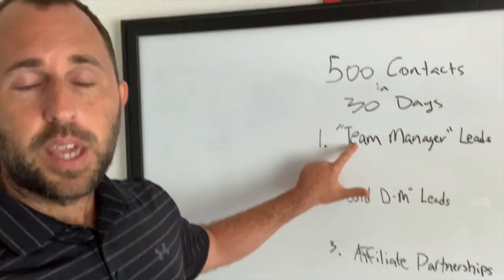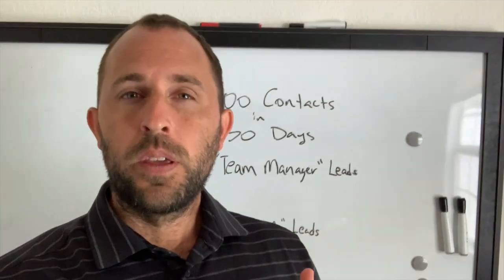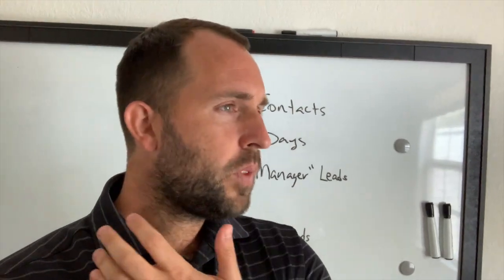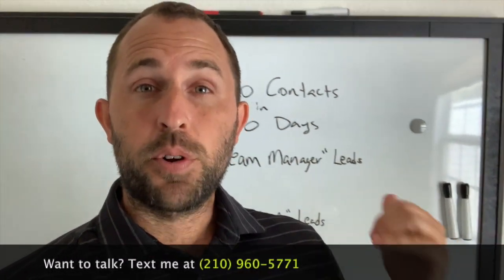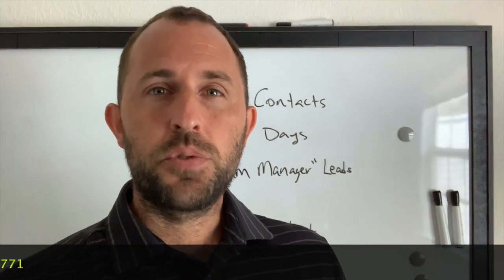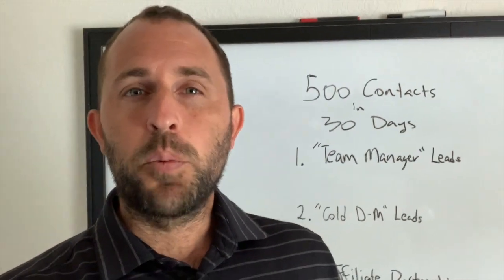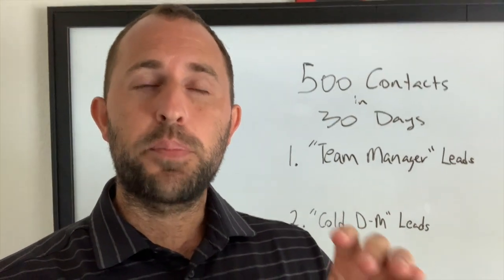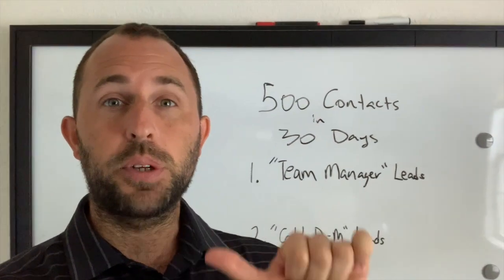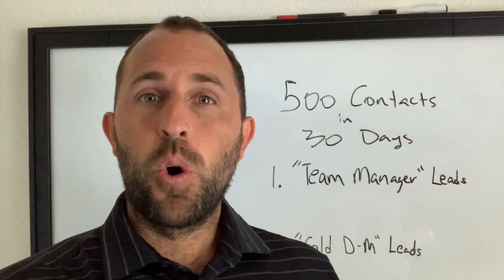We have three different ways, and number one is the team manager leads. Let me explain what this is. Let's say you are a soccer trainer working with kids that are 10 to 14 years old. A great way to get in front of 500 or more leads in one month is to go out to the fields on a Tuesday or Thursday during the season — whenever kids have practice — and network with the team manager. The team manager is either a dad or mom who controls the whole email list of that team, responsible for all communication with parents during the season for games, tournaments, practices, and reschedules. That team manager has a lot of influence over the other parents.